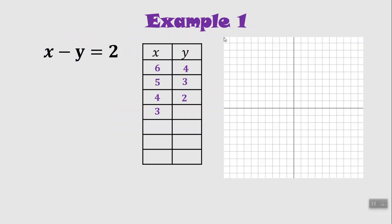How about 3? 3 minus 1 makes 2, so 3, 1 is a solution. 2 minus 0 makes 2, so that's a solution. Let's go ahead and plot these on our coordinate plane.